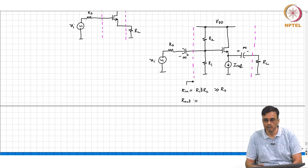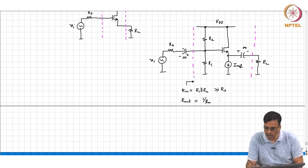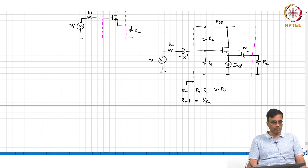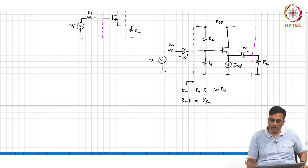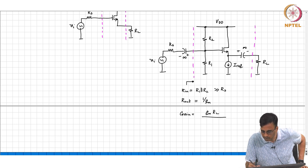The output resistance is 1/gm and must be chosen to be much smaller than R_L. The voltage gain is gm·R_L / (1 + gm·R_L).